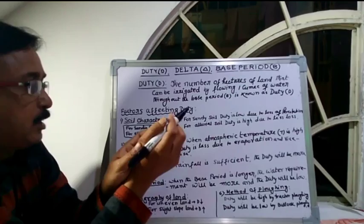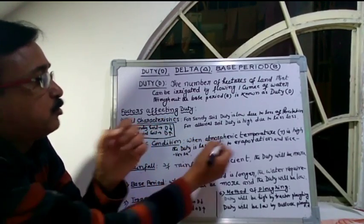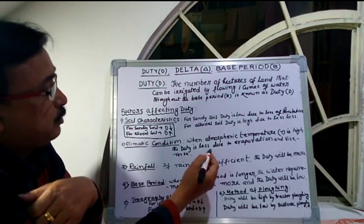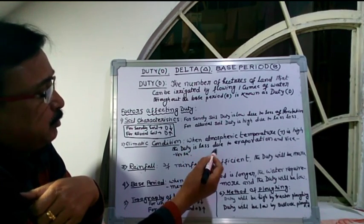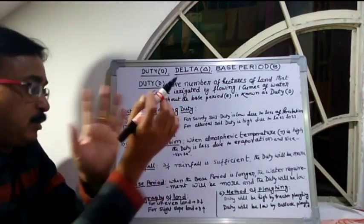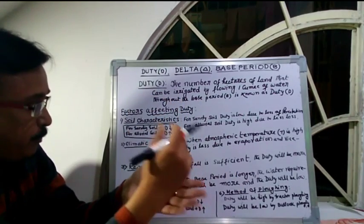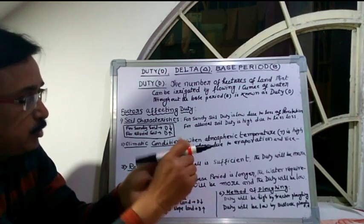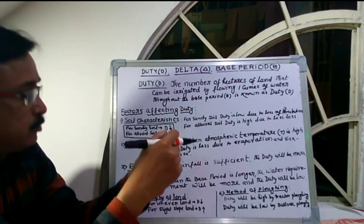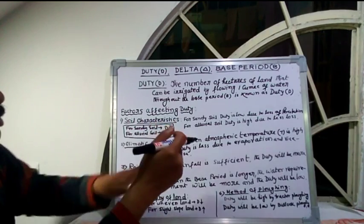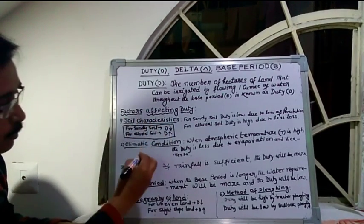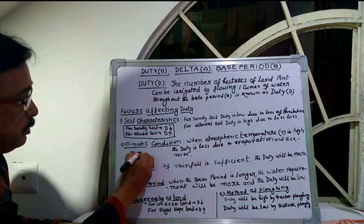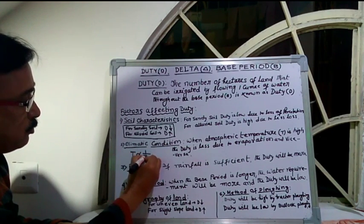Next factor: climatic condition. When atmospheric temperature T is high, duty is less due to evaporation, and vice versa. When atmospheric temperature is higher, evaporation loss is higher and duty will be less. Memory point: T is inversely proportional to D — temperature is inversely proportional to duty.